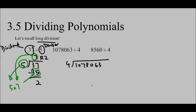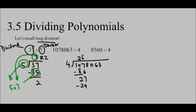Put the dividend on the inside and the divisor on the outside. 4 doesn't go into 1, but it goes into 10, so it goes in 2 times. 4 times 2 is 8. Subtract them off and you'll get 2. Then we bring this 7 down and deal with 27. 4 goes into 27 six times. 6 times 4 is 24. Subtract, and so forth.